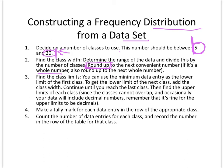You're going to find the class limits. You can use the minimum data entry as the lower limit of the first class. To get the lower limit of the next class, add the class width. And you continue until you reach the last class. Then find the upper limits of each class. They can't overlap, so we're going to add and subtract as we get through it.